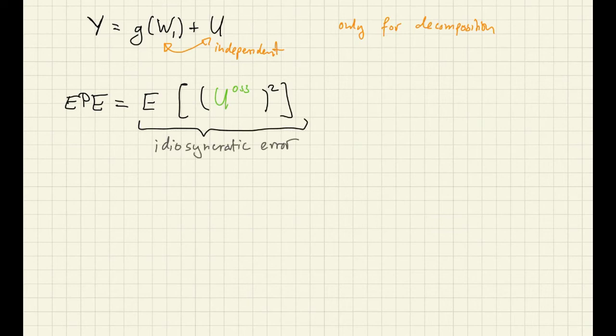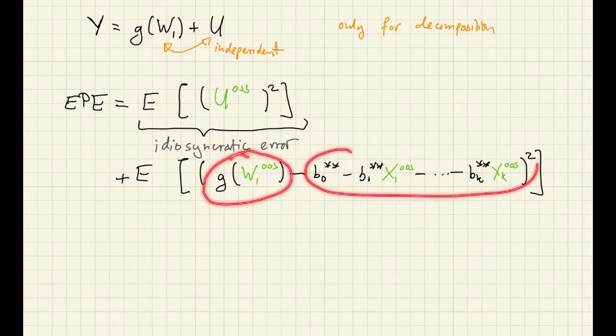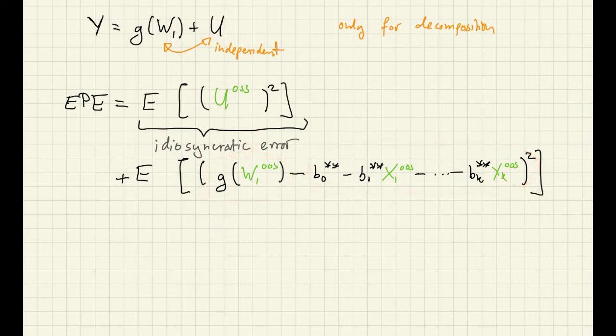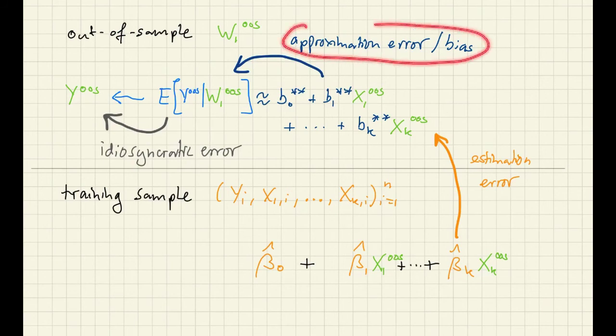The second component of the EPE is as follows. This part of the prediction error is non-zero if the conditional expectation is different from the best linear prediction that we're using to approximate it. So this part represents the approximation error.